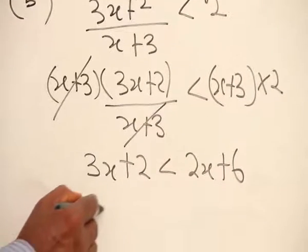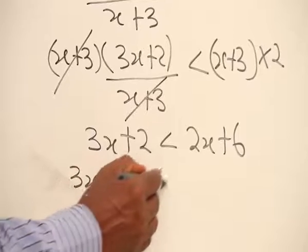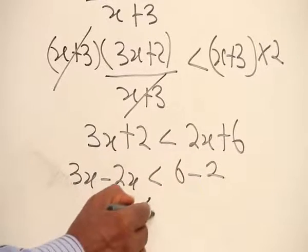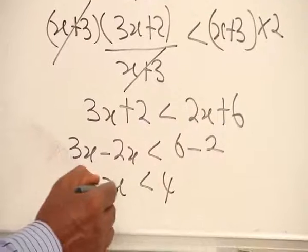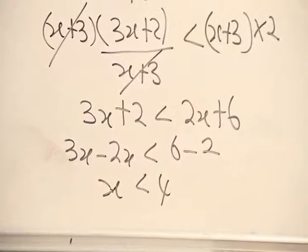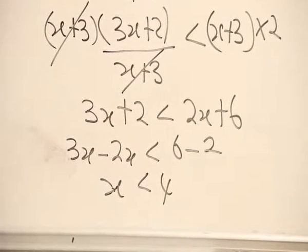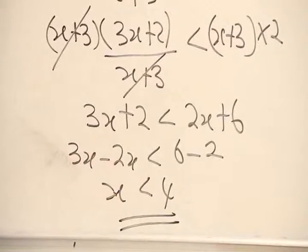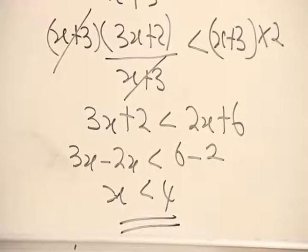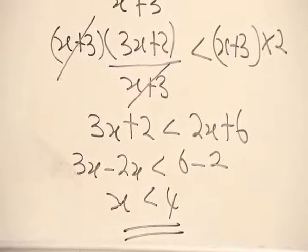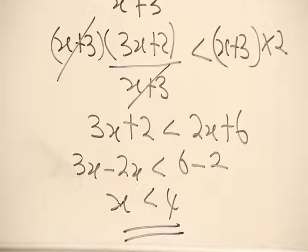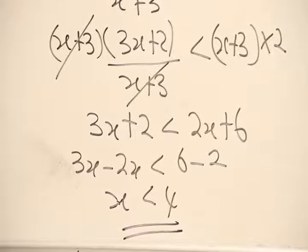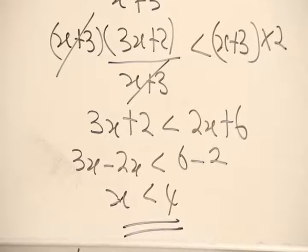Collecting like terms, 3s minus 2s, so s is less than 4. This is the range of values of s for which A is less than 2. The answer is s less than 4. If you are asked to list the elements of s, it does not include 4 and has 3, 2, 1, if s is an integer.